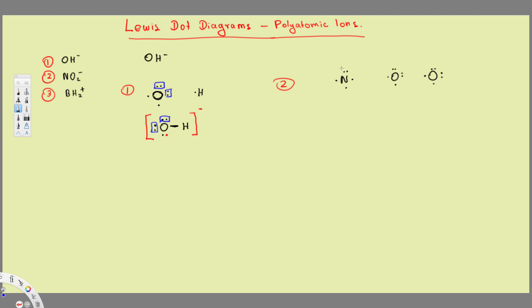Nitrogen has one lone pair, and each oxygen has two lone pairs. Each of them needs eight electrons to have octet format. We have to combine these and make bonds. Connecting nitrogen's unpaired electrons with each oxygen — one bond with one oxygen, another bond with the other oxygen. Each oxygen has two lone pairs to keep.